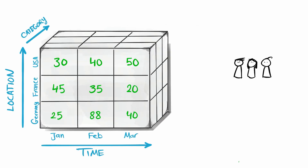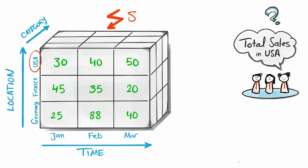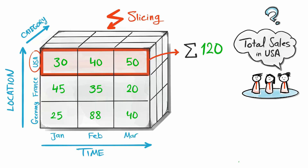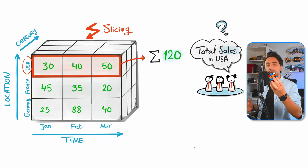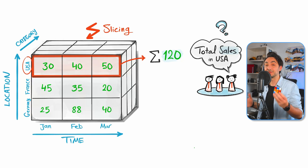We can start answering business questions. For example: find the total sales in the USA. We select the dimension location and filter it to only the member USA — this operation is called slicing the cube. Then we aggregate the measure to get the total sales of 120. With a cube we can do multiple operations: slicing, dicing, roll up, drill down, and more, enabling fast answers to business questions.